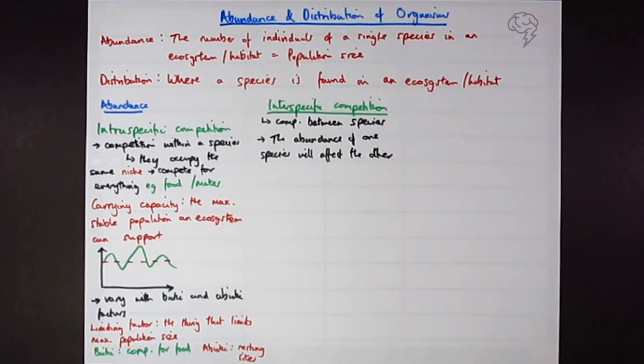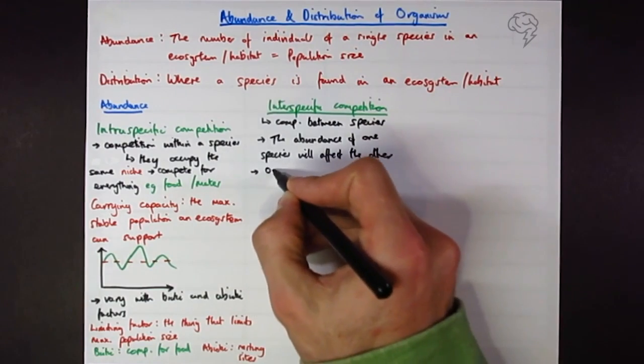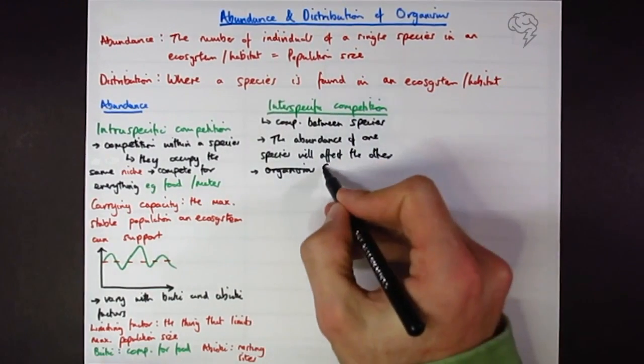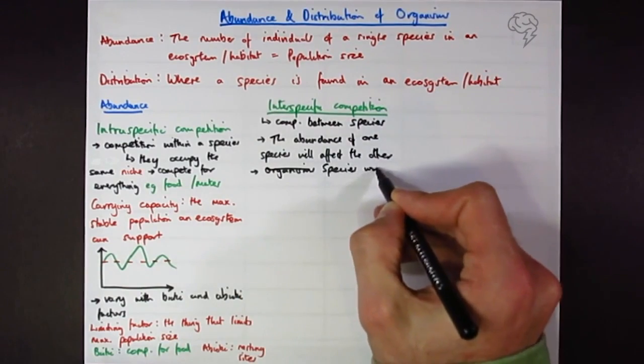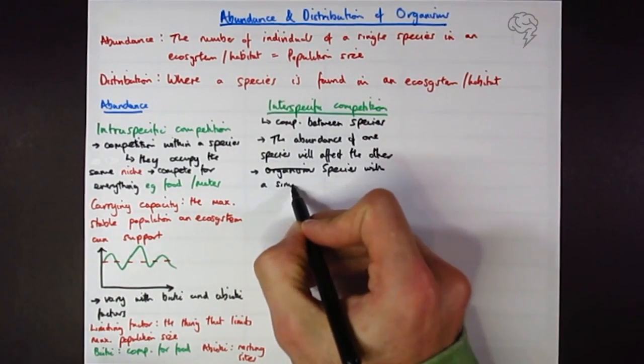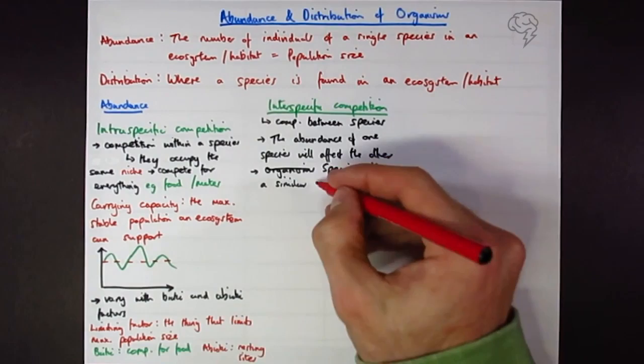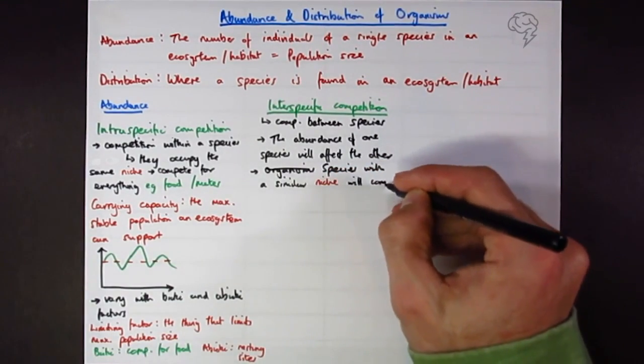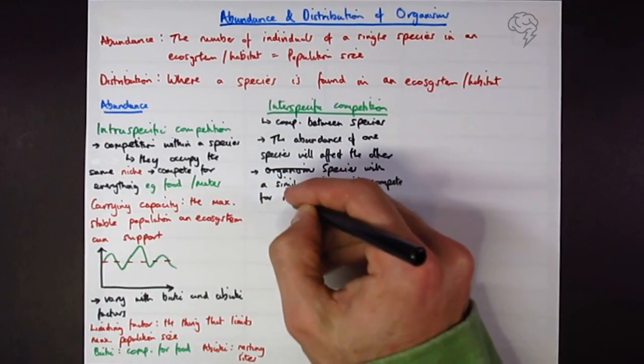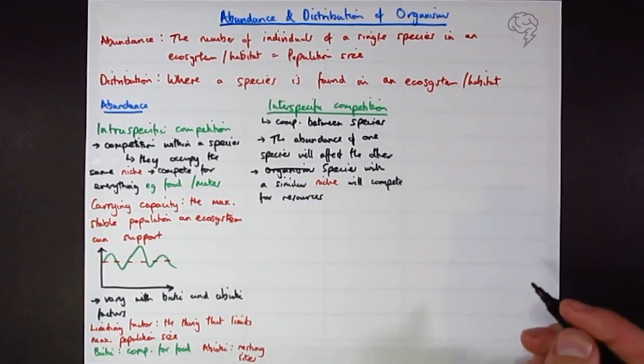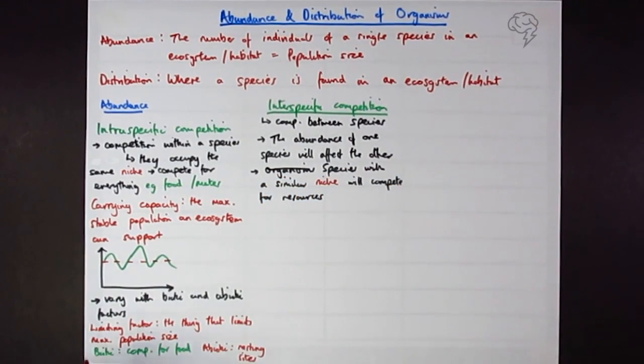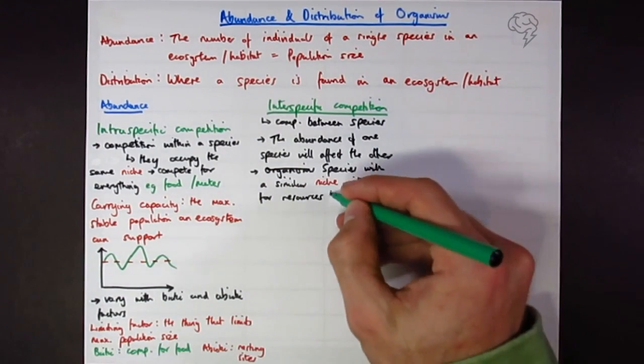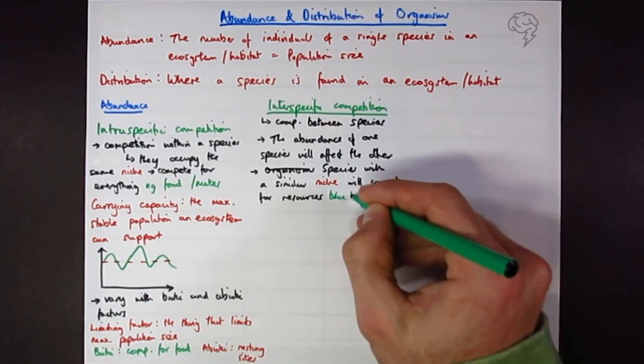We could look at obviously organisms with a similar niche are going to compete for resources. There's a full video on the niche concept, so I suggest you watch that for full details. The example I use is a blue tit and a great tit - they're obviously going to eat similar things, they're going to live in similar places, they're going to have interspecific competition.